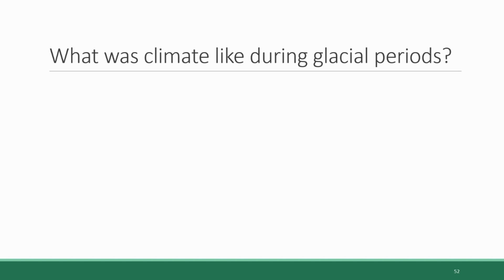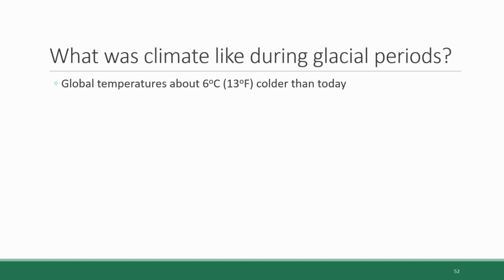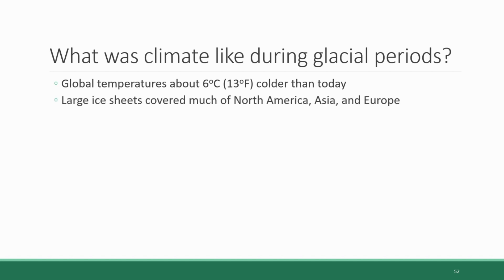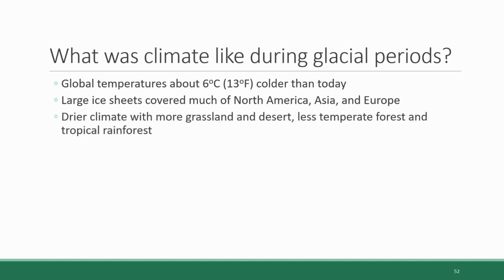Evidence suggests that average global temperatures during these periods were about 6 degrees Celsius or 13 degrees Fahrenheit colder than they are today, which may not seem like a super dramatic difference, but it is sufficient to cause major changes on the surface of the planet. During these periods large ice sheets covered much of North America, Asia, and Europe. The climate was also drier,